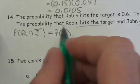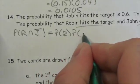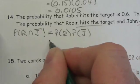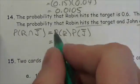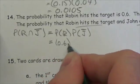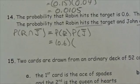So this will be the probability that Robin hits the target multiplied by the probability that John misses the target. Now we are told the probability that Robin hits it, it's 0.6. We are not, however, told the probability that John misses the target.